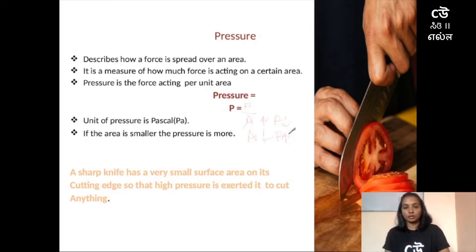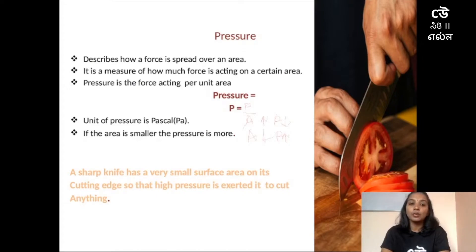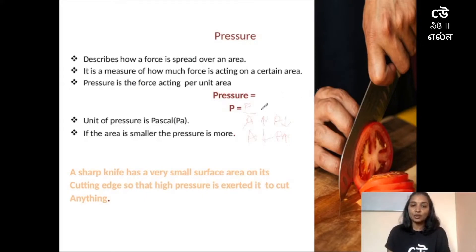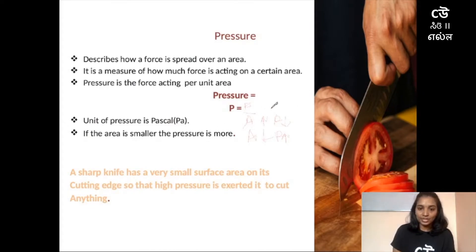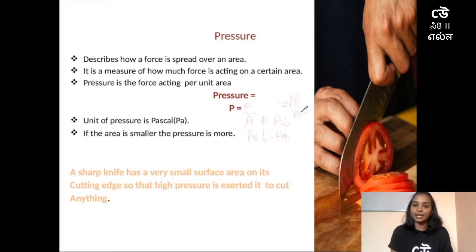Whenever we want to measure any physical quantity, we use units. To measure pressure we use the unit Pascal, and we can also express it as force per area. The unit of force is Newton, represented by capital N, and the unit of area is meter squared. So we can write the unit as Newton per meter squared. The SI unit of pressure is Pascal, represented by Pa.